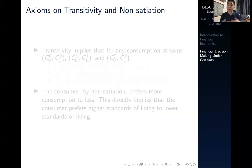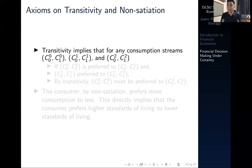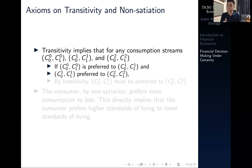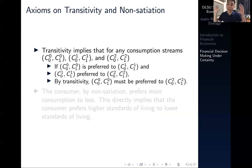The next axiom, familiar from micro, is transitivity. For any three or more given consumption streams, if you prefer the first to the second consumption stream and the second to the third, then by transitivity you prefer the first over the third. Because you prefer the second over the third but also prefer the first over the second, you must also prefer the first over the third. This just captures a consistency in preferences.